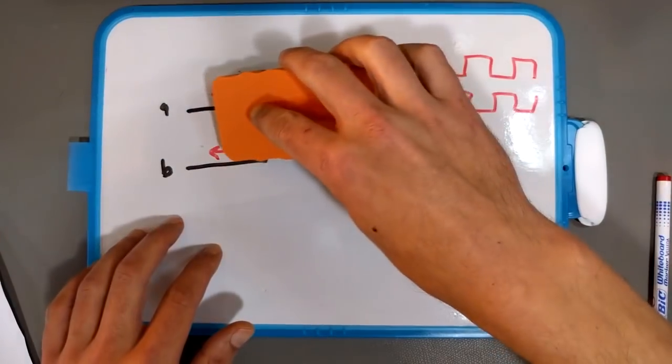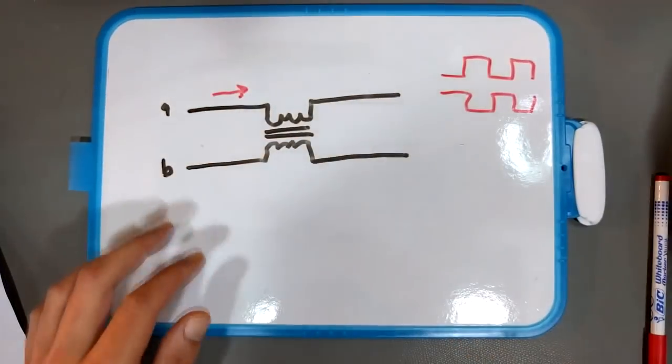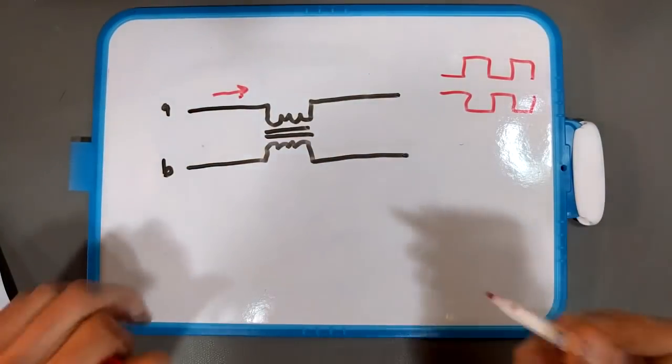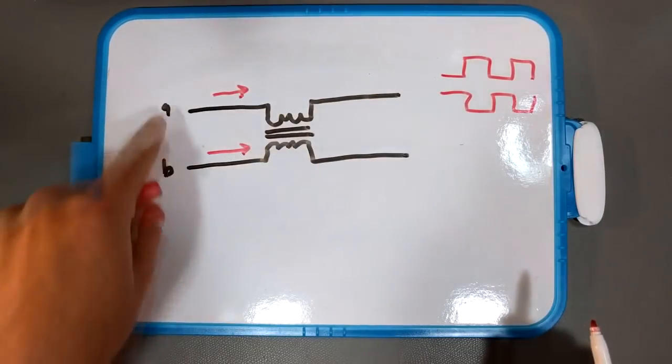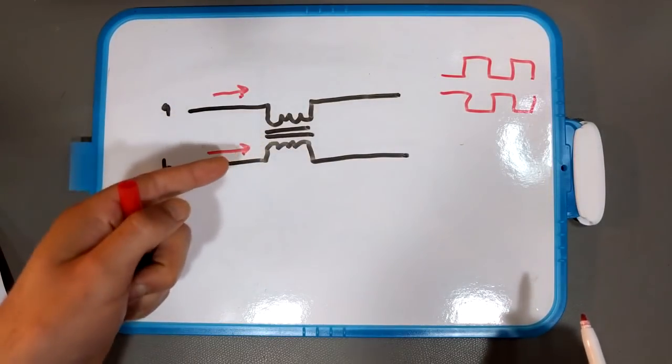The noise that we're talking about here generally takes the form of what's called a common mode current which means both currents in both of your signal wires are traveling in the same direction.